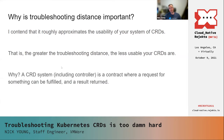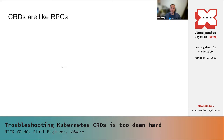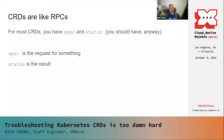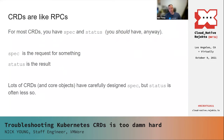A CRD system, including the controller, is a contract where you can request something and the controller will go off and reconcile it, then tell you what happened. But if you don't have a place for the controller to put that information, it's going to be really hard to figure out what went on. In some ways CRDs are like RPCs. For most CRDs you should have a spec and a status. Spec is the request for something and status is the result. It's that simple — but lots of CRDs and core objects have carefully designed specs while status is much less so.